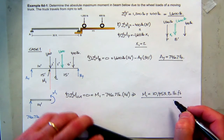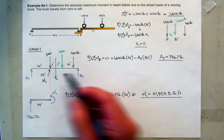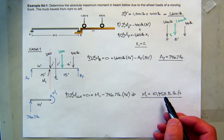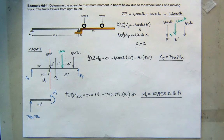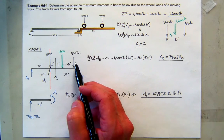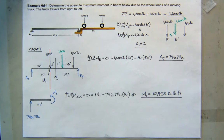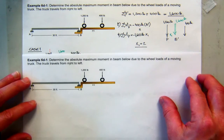That is one possible location and value for the absolute maximum moment, but we have to check again. The second case requires balancing the other load — the 400-pound force — with the resultant force about the centerline.